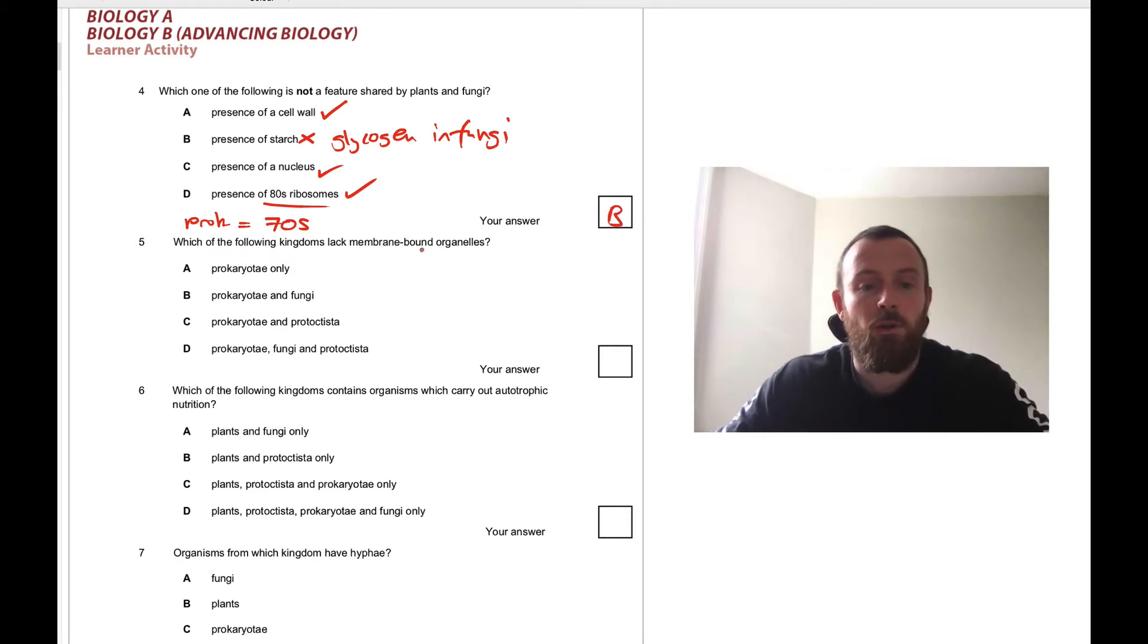Which of the following kingdoms lack membrane bound organelles? It's definitely prokaryotes, but is it anything else? Fungi, well they do, so it's not fungi. Protoctista, those are eukaryotes as well, so they do. So it's prokaryotes only. That's a defining feature in fact of prokaryotes.